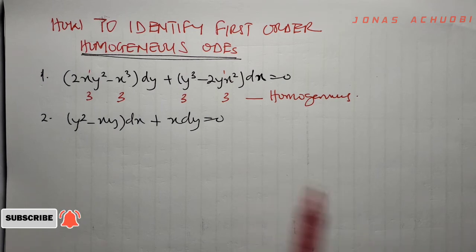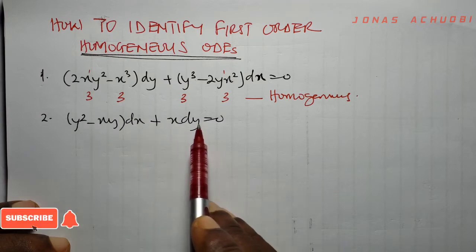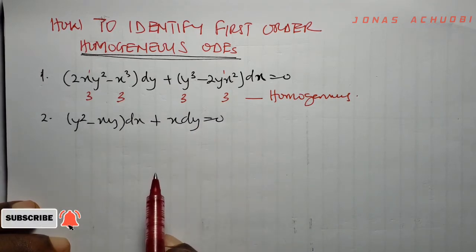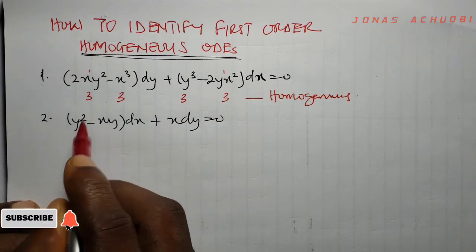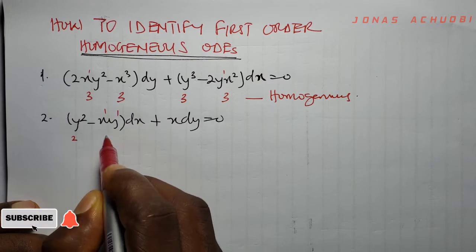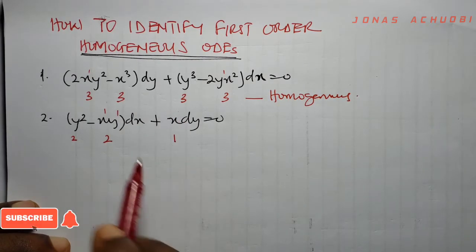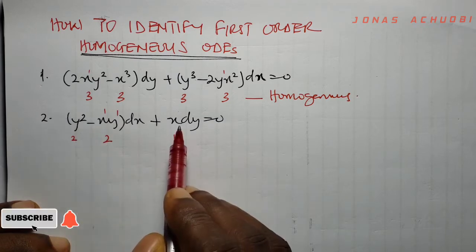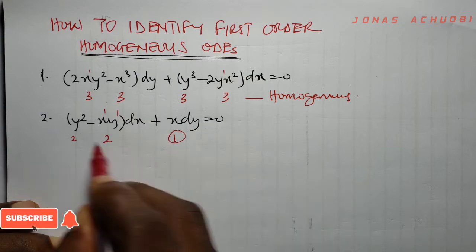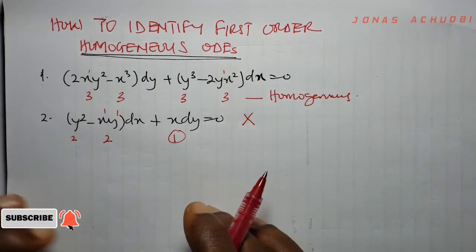Let's look at the second example: (y² − xy)dx + x dy = 0. Let us check again if this ODE is homogeneous. The degree of the first term, y², is 2. The second term, xy, has degree 2. The last term, x, has degree 1. The first two terms have degree 2 but the last term has degree 1, so the degrees are not the same. Hence, this equation is not homogeneous.